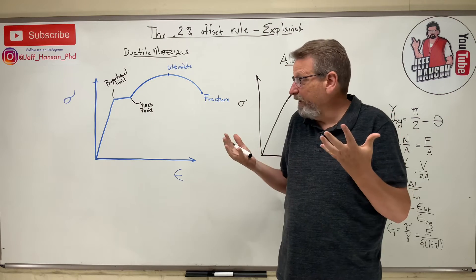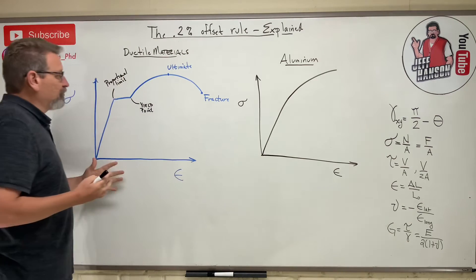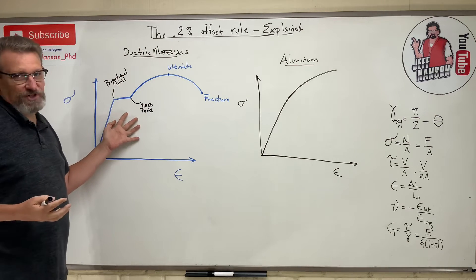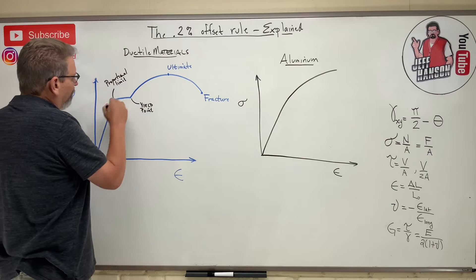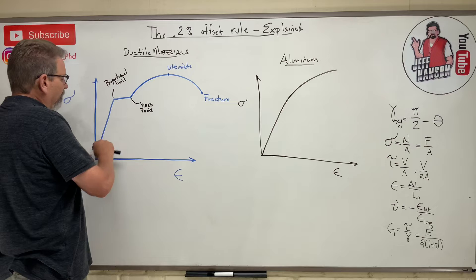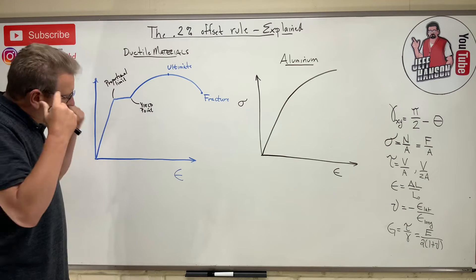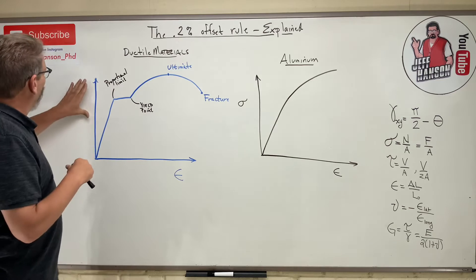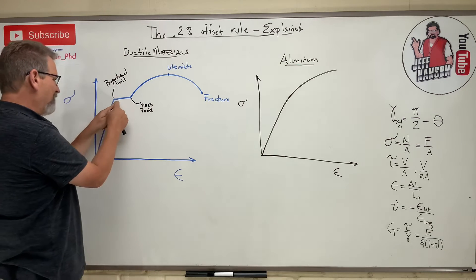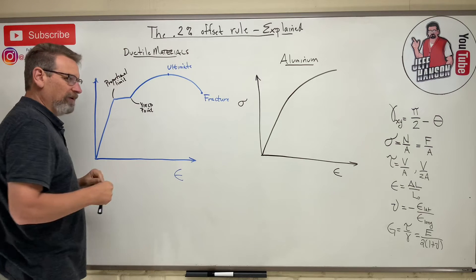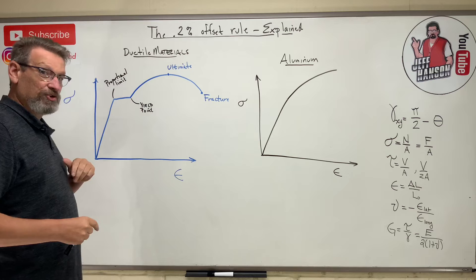If you've looked at our stress-strain diagram, which we talked about in the last video, you'll see an area where after it goes through the elastic region, it hits yielding. If you start to really think about what's going on — I'm adding stress and then the material starts to deform, it starts to deflect without any more stress being added.